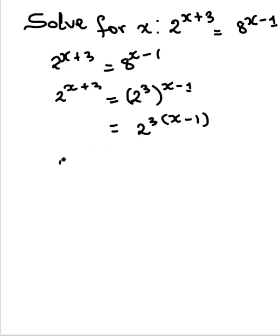So we have 2 to the power x plus 3 equals 2 to the power 3 times x minus 1. Since the bases are the same, 2 and 2 on the left hand side and the right hand side, we equate the powers.